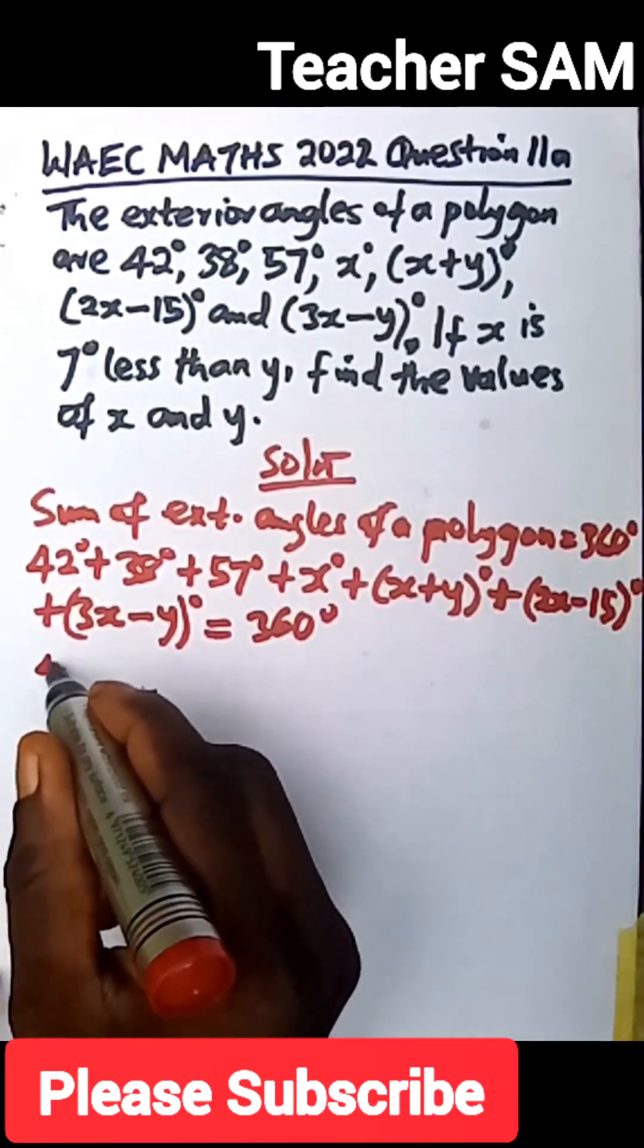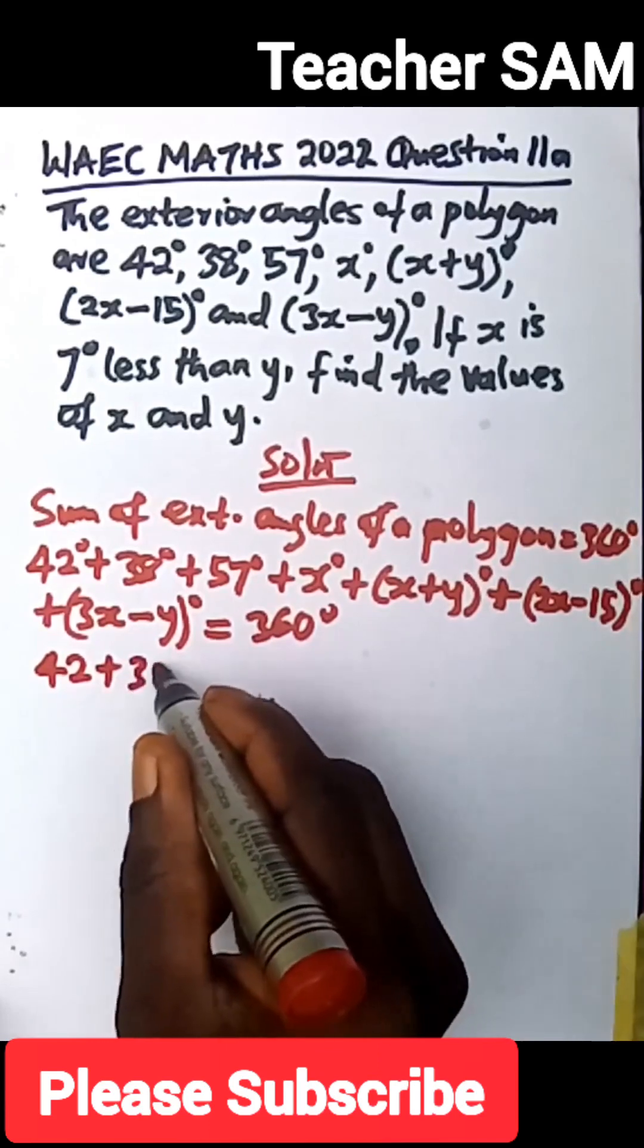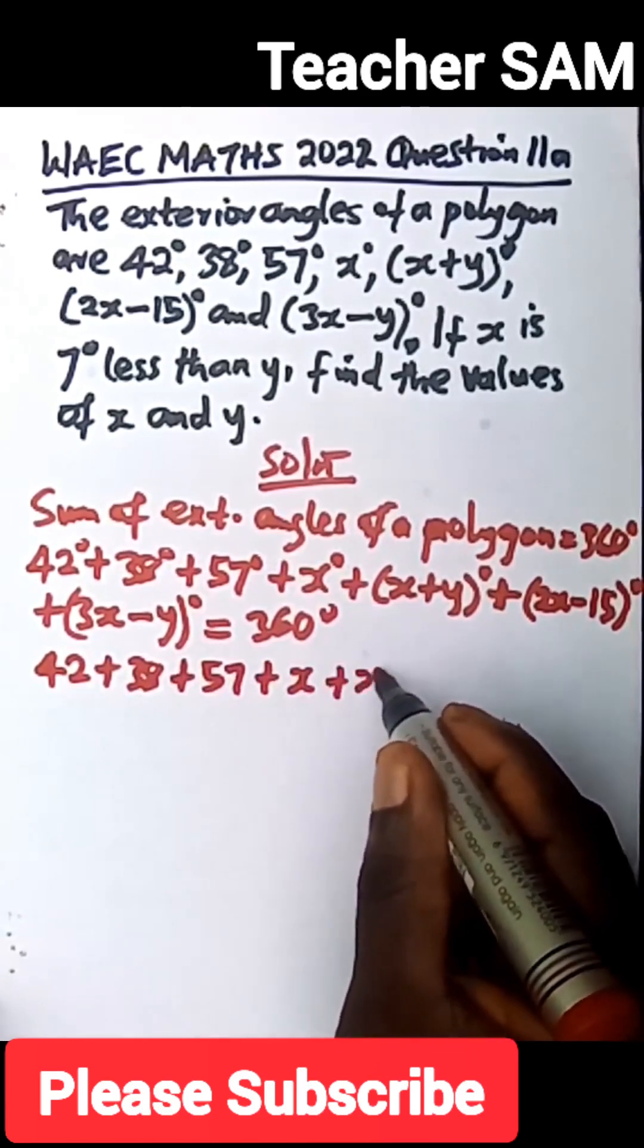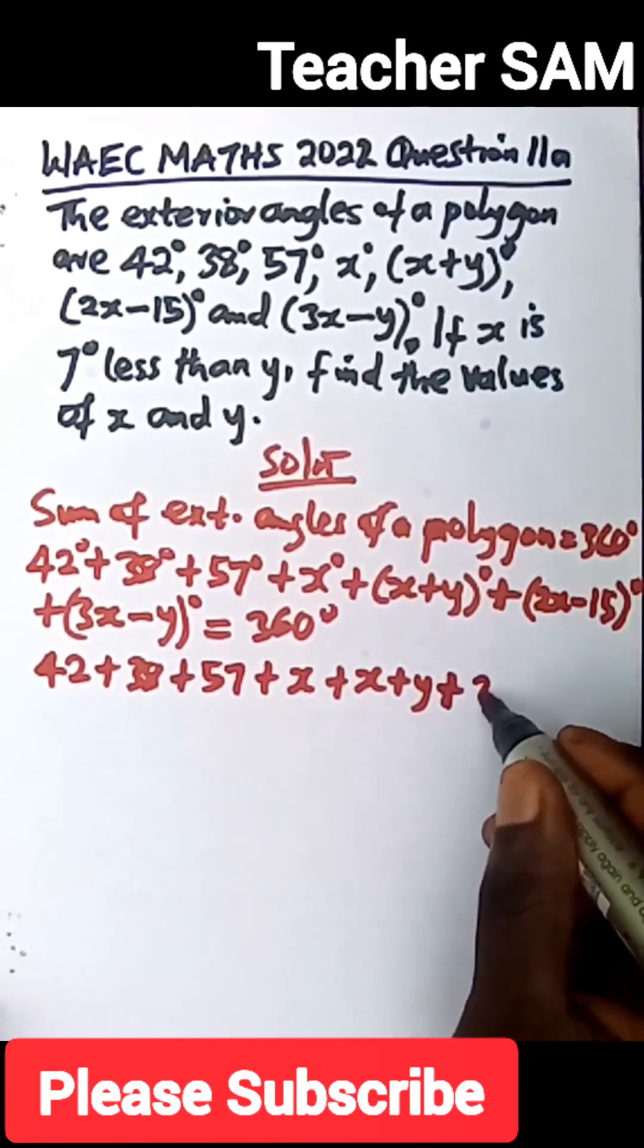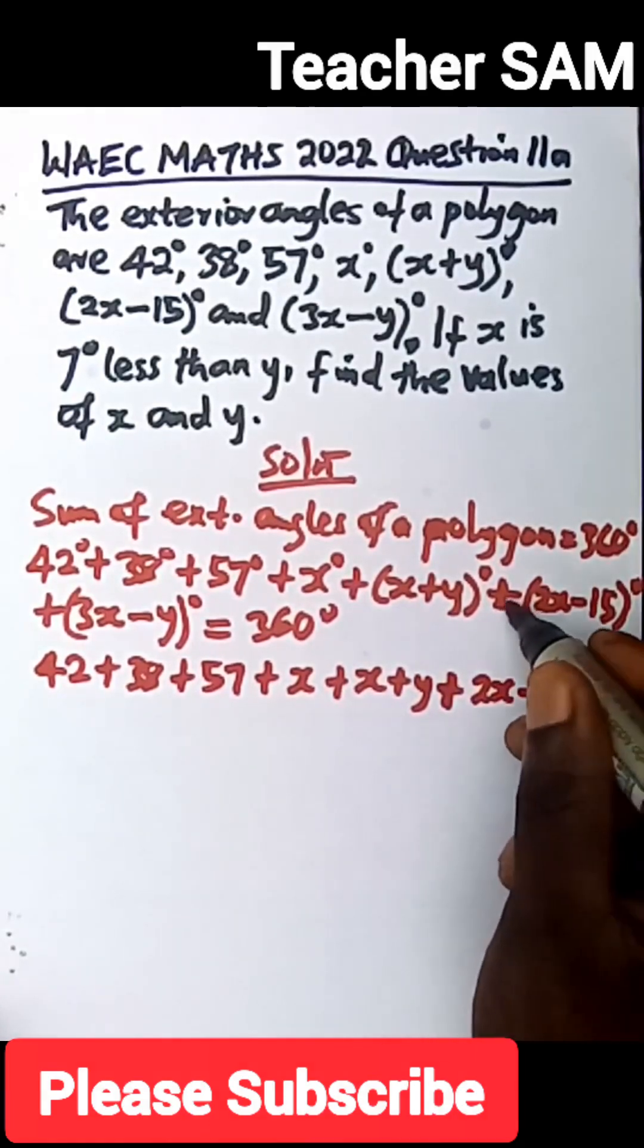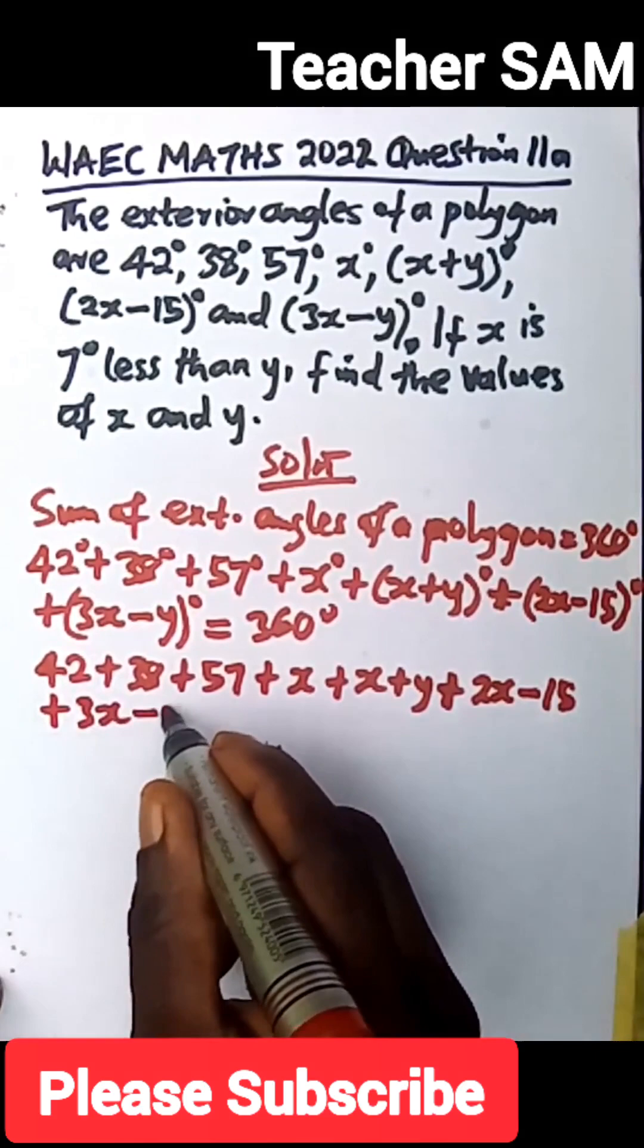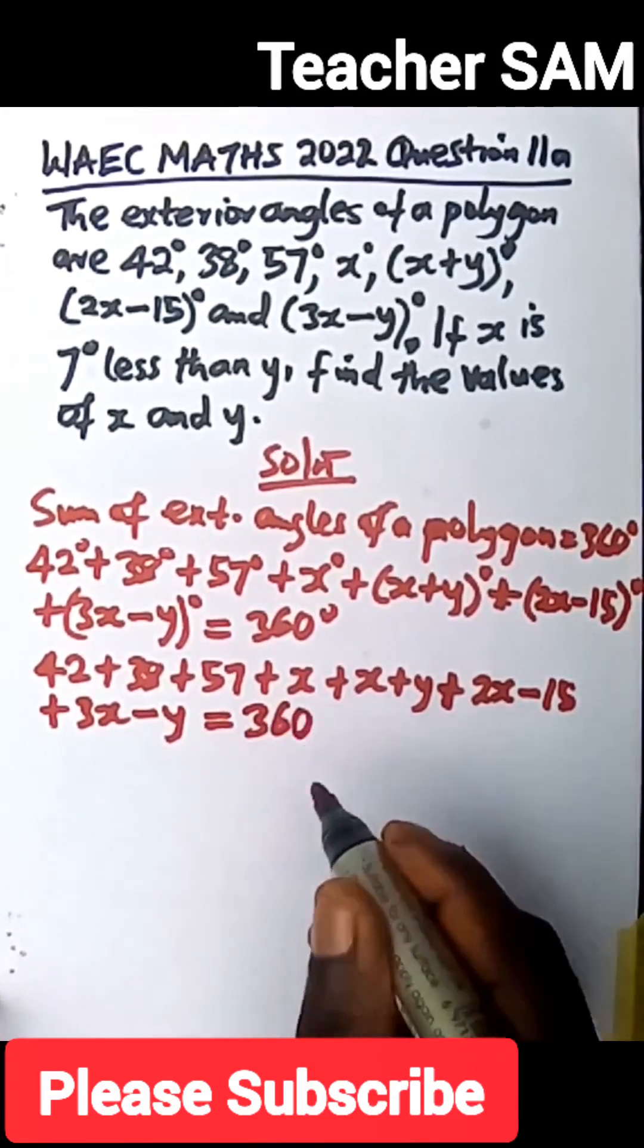Now we clear up this. We have 42 plus 38 plus 57, plus x, plus x, plus y, plus 2x minus 15. This is positive, so this will remain the same. So we have plus 3x minus y, this will remain the same as well, equals to 360.